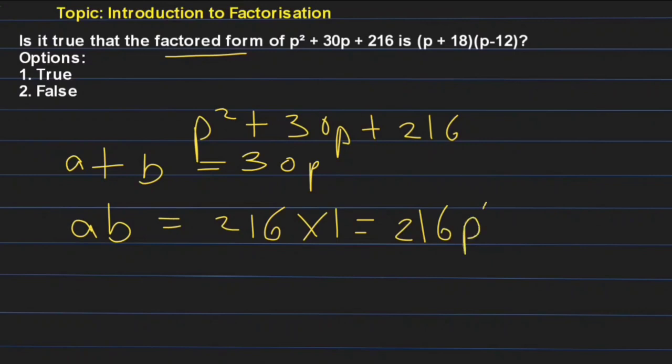So what are the two numbers? Let us check. If the two numbers are 18 and 12, if you multiply 18 × 12, yes, they give us 216.